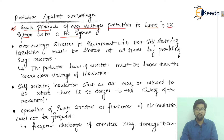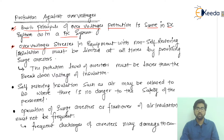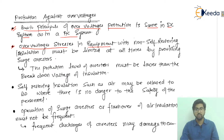The second point is about overvoltage stresses. If there are overvoltage conditions, stresses arise in the equipment which may cause damage to the system with non-self-restoring insulation — that is, the insulation is not self-restoring at that time.